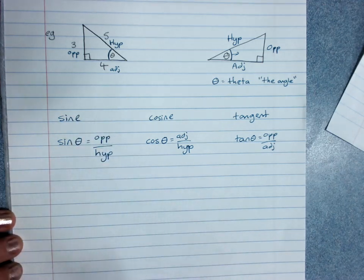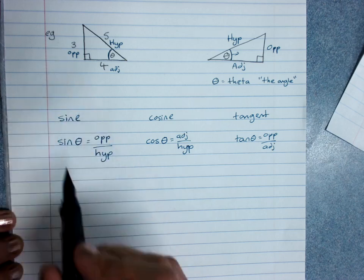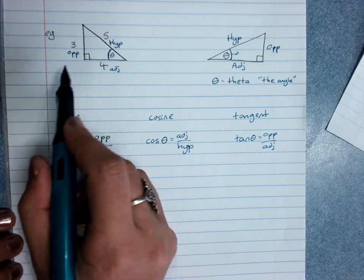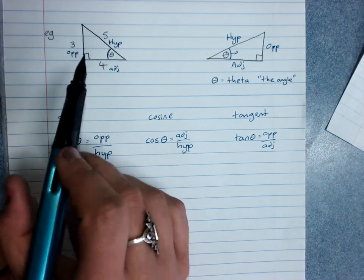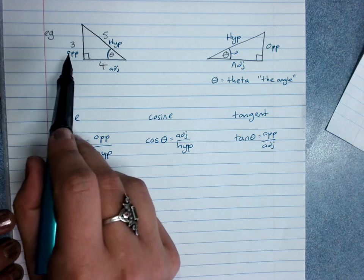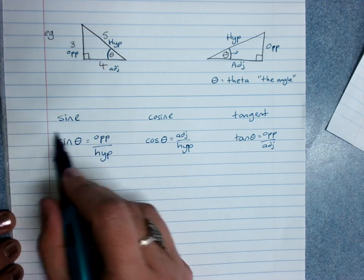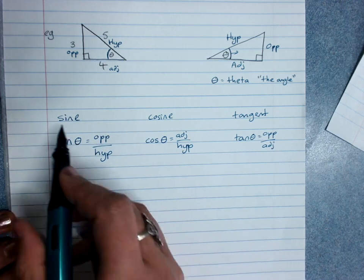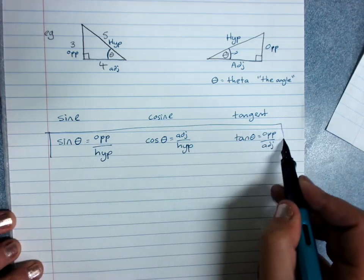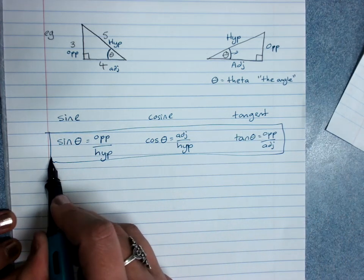Now if they ask you to write the ratios for this triangle, so if that was our question, write sine, cos, and tan of the angle for this triangle, you would write the ratio as given here. So these are our big important ratios, which we absolutely must know.